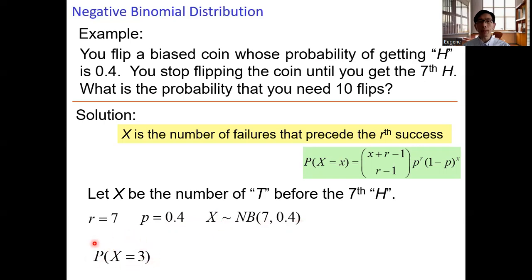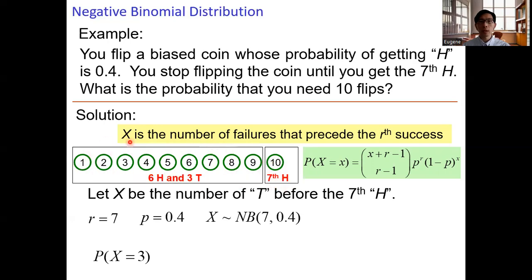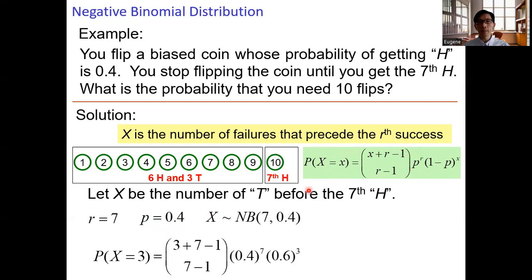We want to find the probability that x equals 3. x is the number of failures — the number of tails we get. Altogether, 10 flips: at the tenth flip, this must be the seventh head. So in the first nine flips, we should get six heads and three tails. So x equals 3, three failures. Failure corresponds to the event tail. With r equals 7 and p equals 0.4, we plug into the formula and get the corresponding probability: 0.0297.